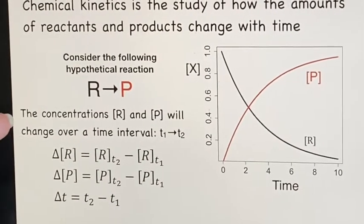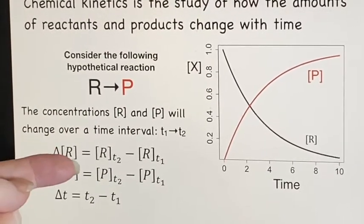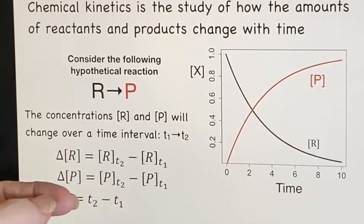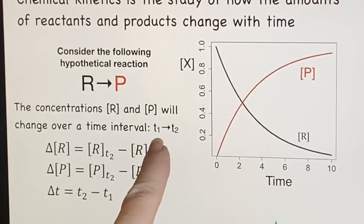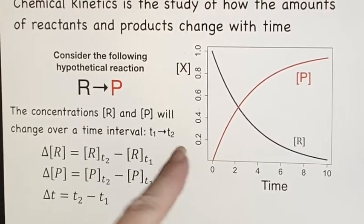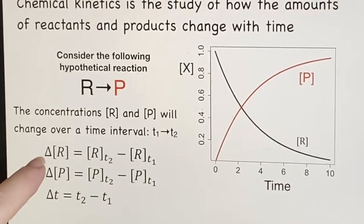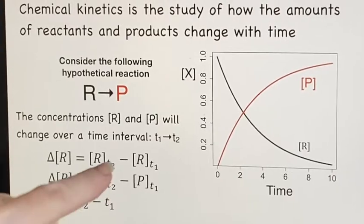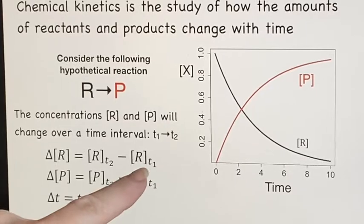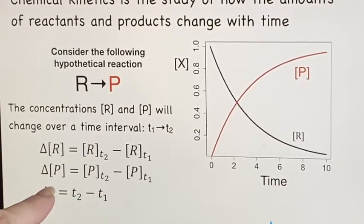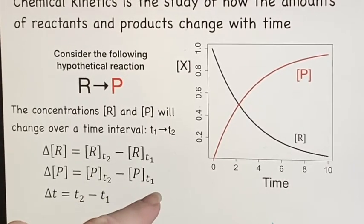So these concentrations for reactant and product are going to change and we can look at them over a particular time interval. In this case, we've decided T1 is the first time and T2 is the second time, which would mean the change in the amount of time is T2 minus T1. The change in concentration of R is going to be the concentration of R at T2 minus concentration of R at T1. And similarly for the products, concentration at time T2 minus concentration at time T1.